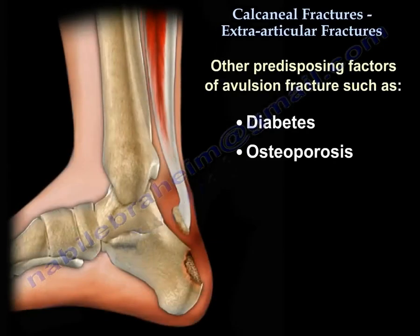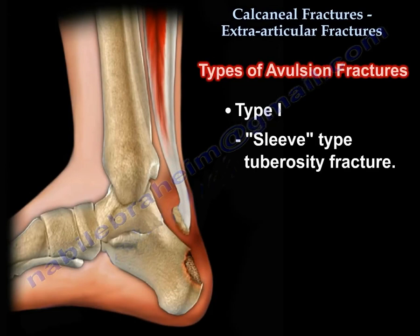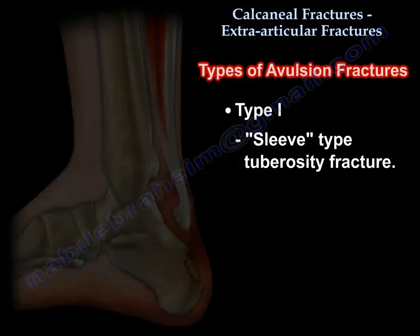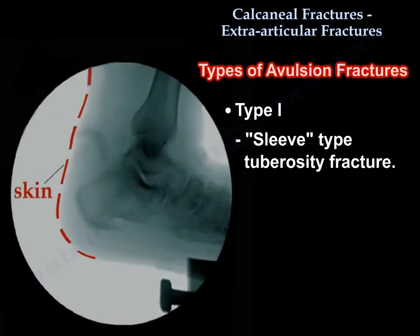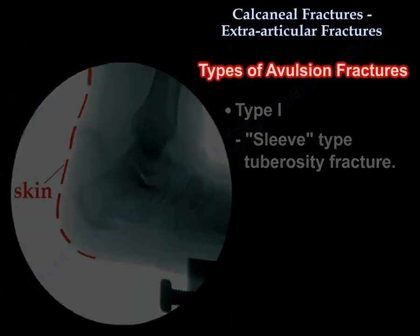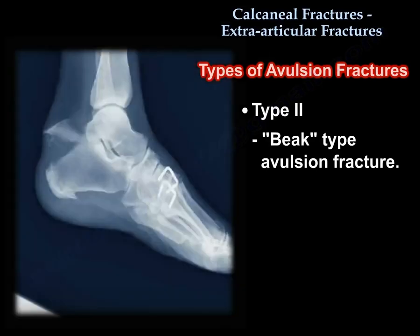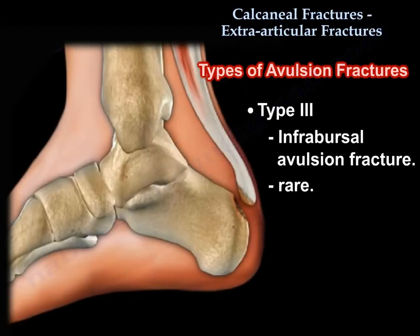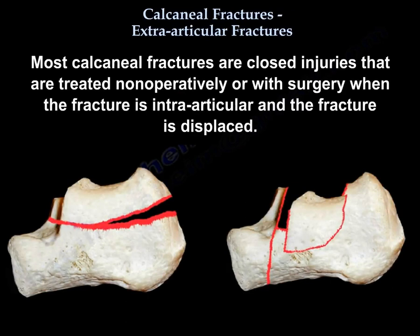There may be predisposing factors such as diabetes and osteoporosis. Several types exist: the sleeve type, the tuberosity fracture, the beak type avulsion fracture, and the rare infrared cell avulsion fracture.